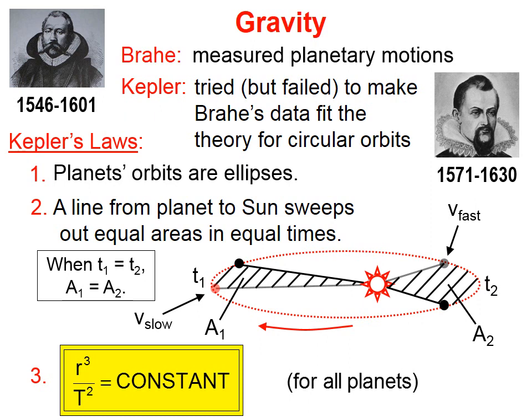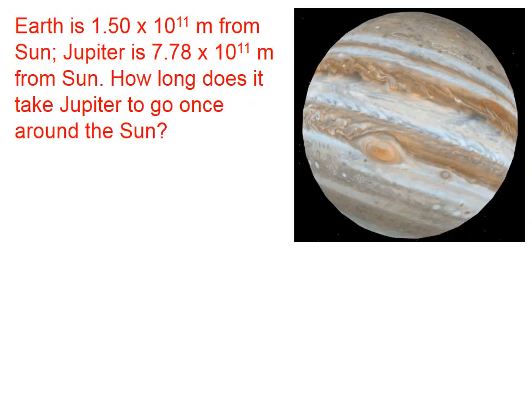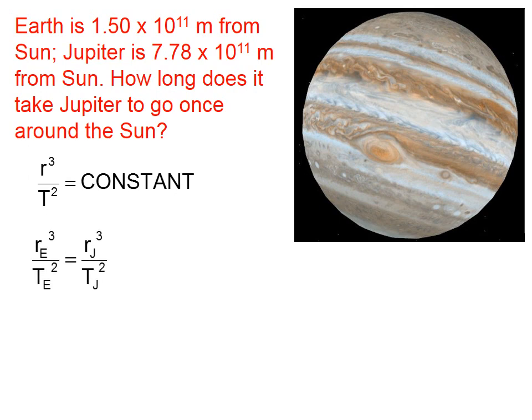Let's try an example problem with Kepler's Third Law. The Earth is 1.50 times 10 to the 11th meters from the sun. Jupiter is 7.78 times 10 to the 11th meters from the sun. How long does it take Jupiter to go once around the sun? Kepler's Third Law says that r cubed divided by t squared is a constant. If I take r cubed for the Earth divided by t squared for the Earth, I get a certain number. If I take r cubed for Jupiter divided by t squared for Jupiter, I get that same number. So I can write this expression where e represents Earth and j represents Jupiter.